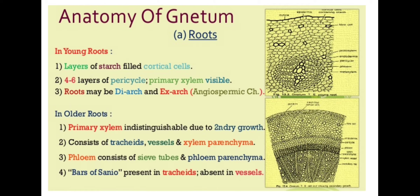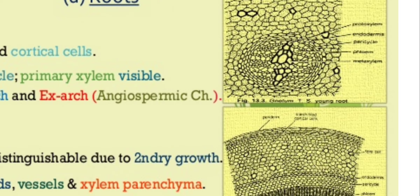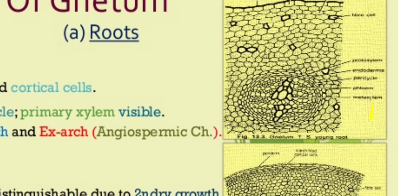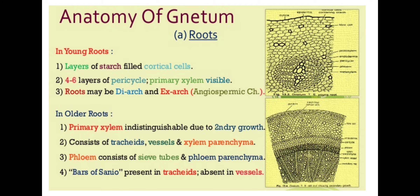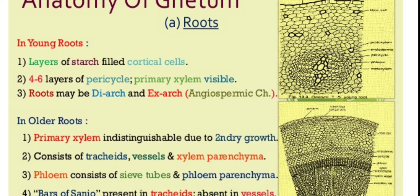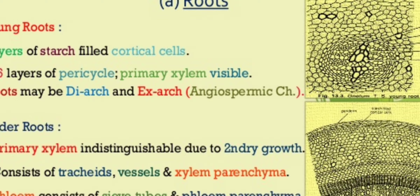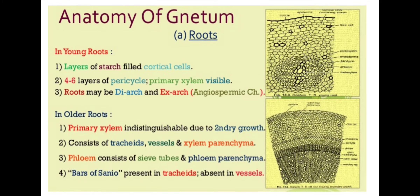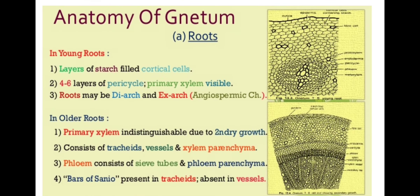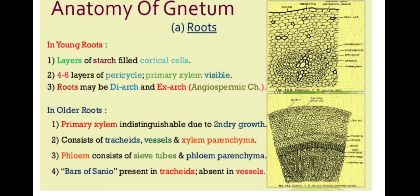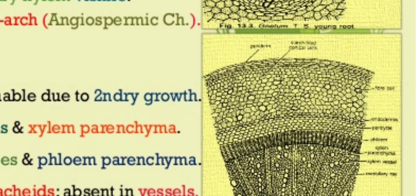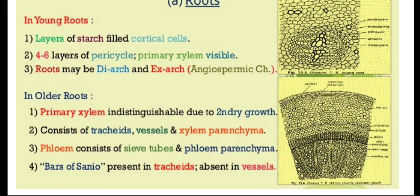Next is the anatomy of Gnetum. Images show the young root and mature root. The young root is without secondary growth and resembles a dicot. Layers of starch are filled in the cortical cells. 4 to 6 layers of parenchymatous primary xylem are visible. The xylem may be diarch, as in dicots. In older roots, diarch xylem is distinguishable due to secondary growth, and it consists of tracheids, vessels, and xylem parenchyma.